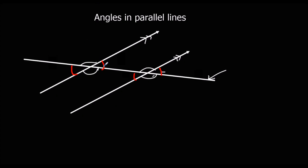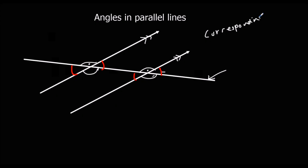We end up with all of the big angles being the same, and all the little angles also being the same. Whenever we've got two matching angles — the same one here corresponds to the same one here — those are called corresponding angles, and corresponding angles are equal.